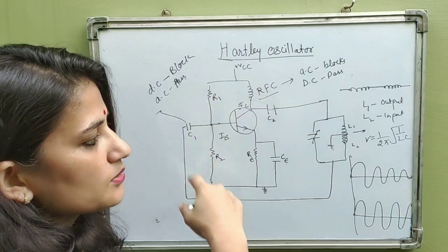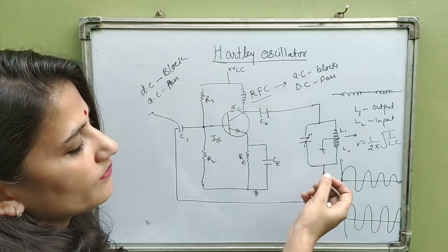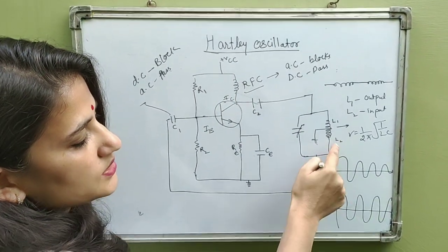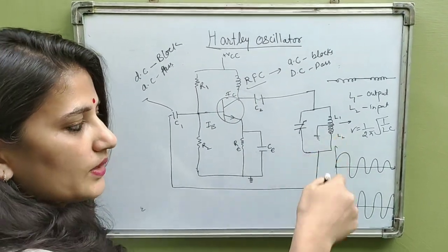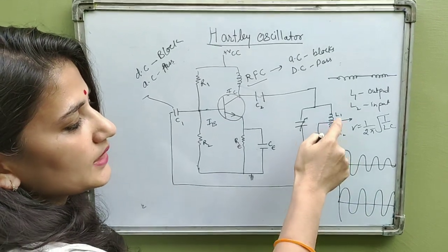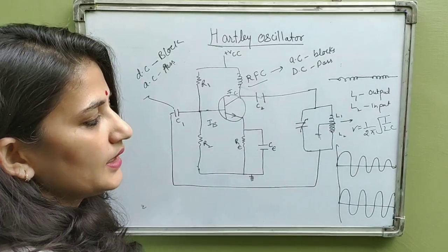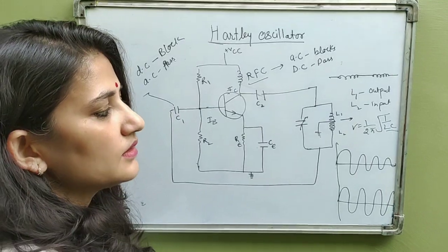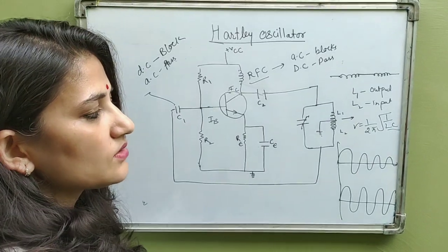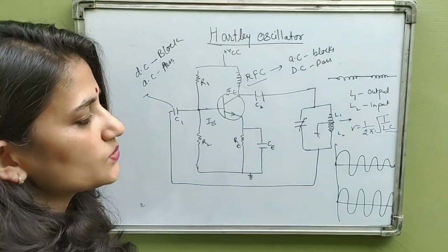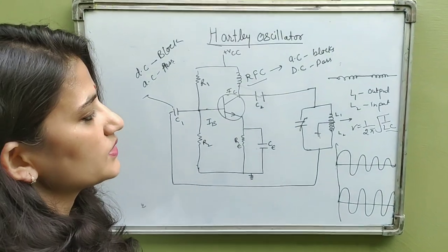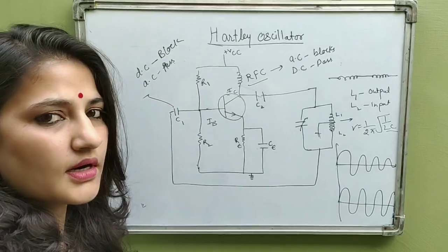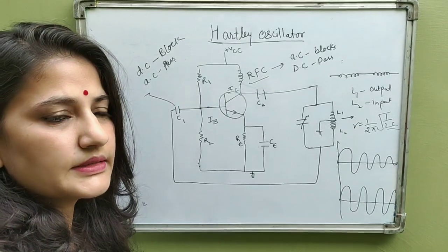The output of this circuit is taken across L2. L2 is usually connected with L1. By changing the inductance or the capacitance, you can change the frequency of oscillations. This is all about the Hartley oscillator.